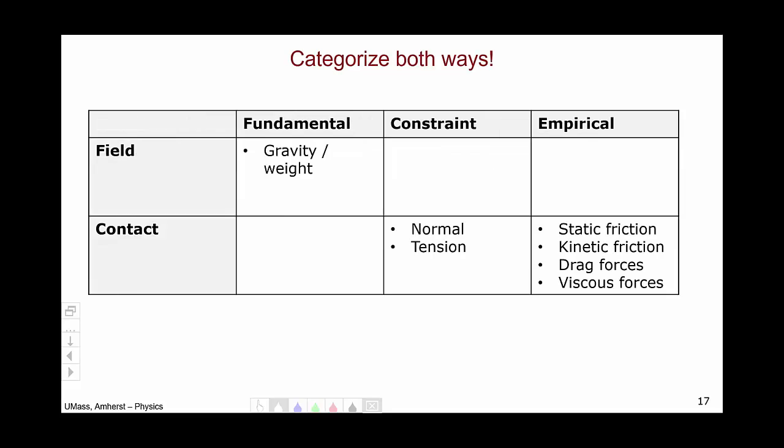We can, in fact, categorize forces in both dimensions simultaneously. Gravity and weight is a fundamental force that acts through a field. Whereas normal and tension are constraint forces that require contact. While static friction, kinetic friction, drag, and viscous forces that we've talked about in this video are empirical force laws that require contact.